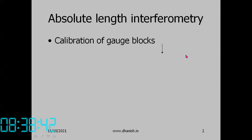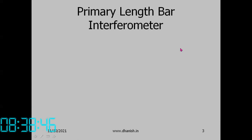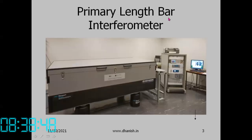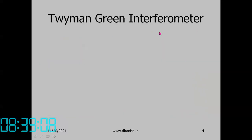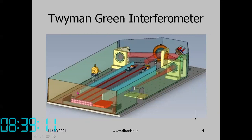Grade K gauge blocks are calibrated using this method. A primary length bar interferometer is used — long gauge blocks are placed inside it. There is a reference gauge block, and interference between the two surfaces is observed through cameras. This is called a Twyman-Green interferometer.